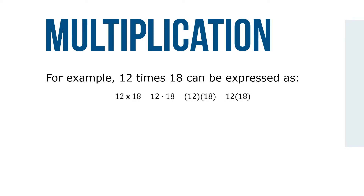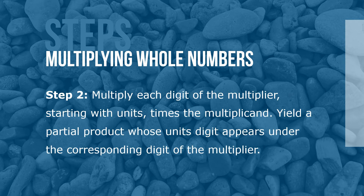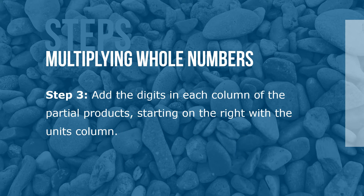For example, 12 times 18 can be expressed in multiple ways. Here are the steps for multiplying whole numbers. Step 1: Write the factors in columns so that the place values line up. Step 2: Multiply each digit of the multiplier, starting with the units, times the multiplicand, yielding a partial product whose units digit appears under the corresponding digit of the multiplier. Step 3: Add the digits in each column of the partial products, starting on the right with the units column.